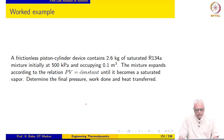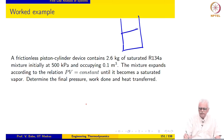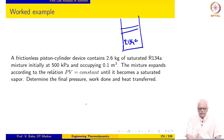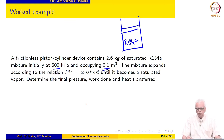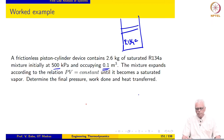The next example involves a frictionless piston-cylinder device containing 2.6 kg of saturated R134A mixture at an initial pressure of 500 kilopascal, occupying a volume of 0.1 meter cube. We know the specific volume and the pressure, so we can establish that it is a saturated mixture. The mixture expands according to the relation PV equals constant until it becomes a saturated vapour, and we are asked to determine the final pressure, work done, and heat transferred.